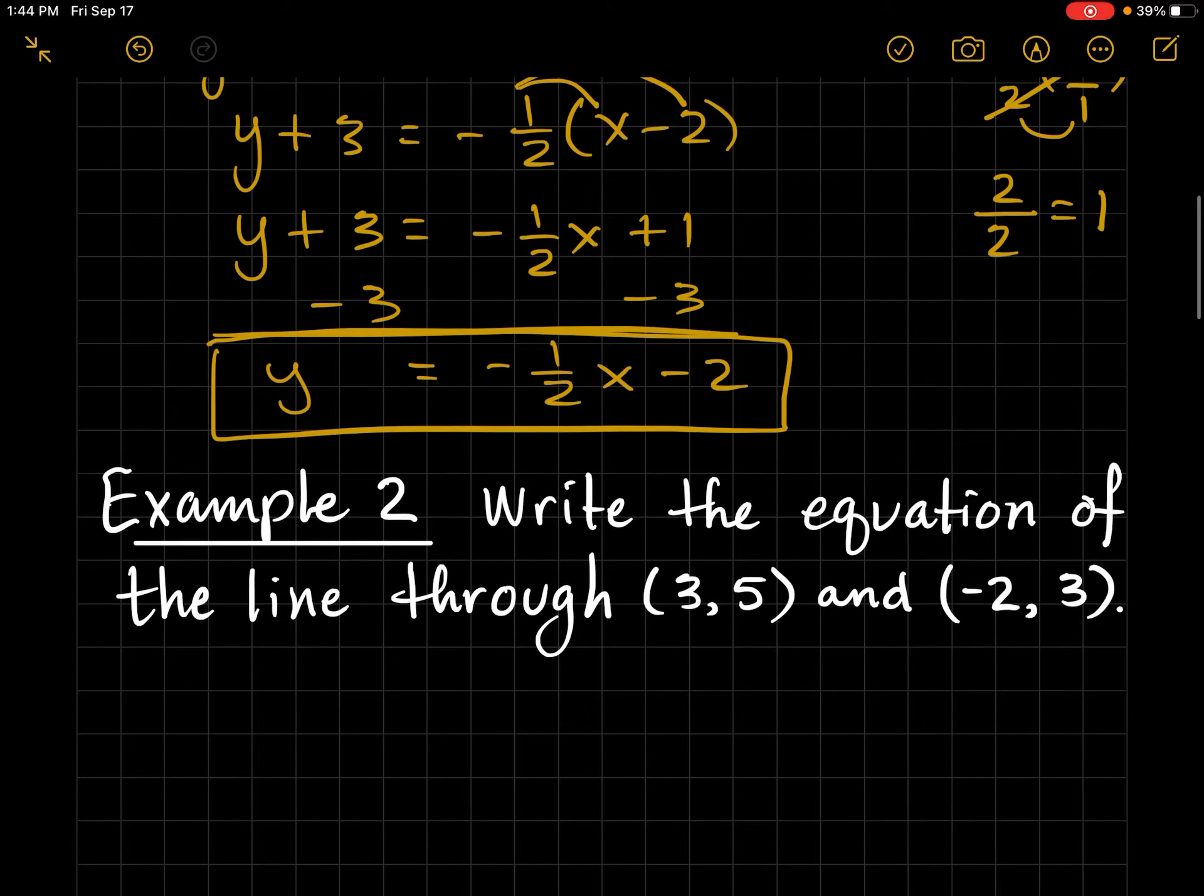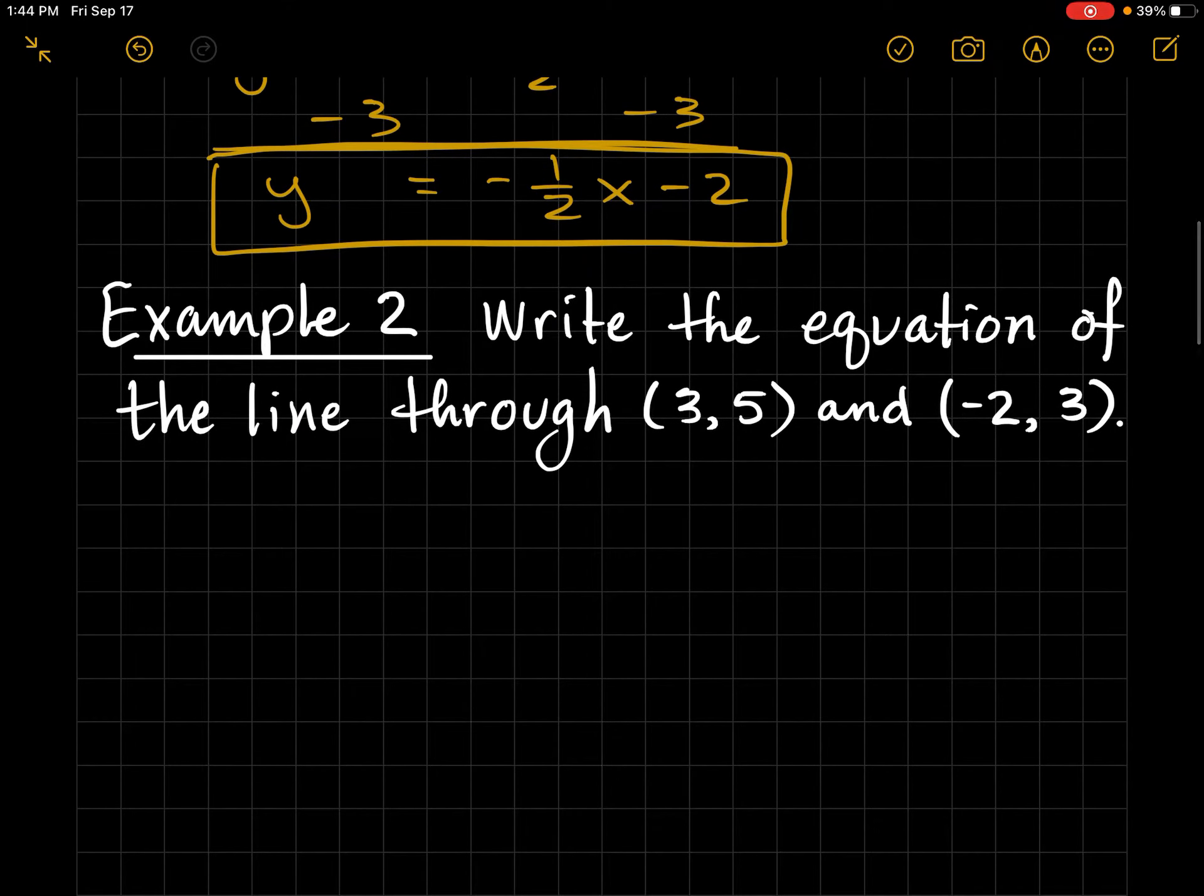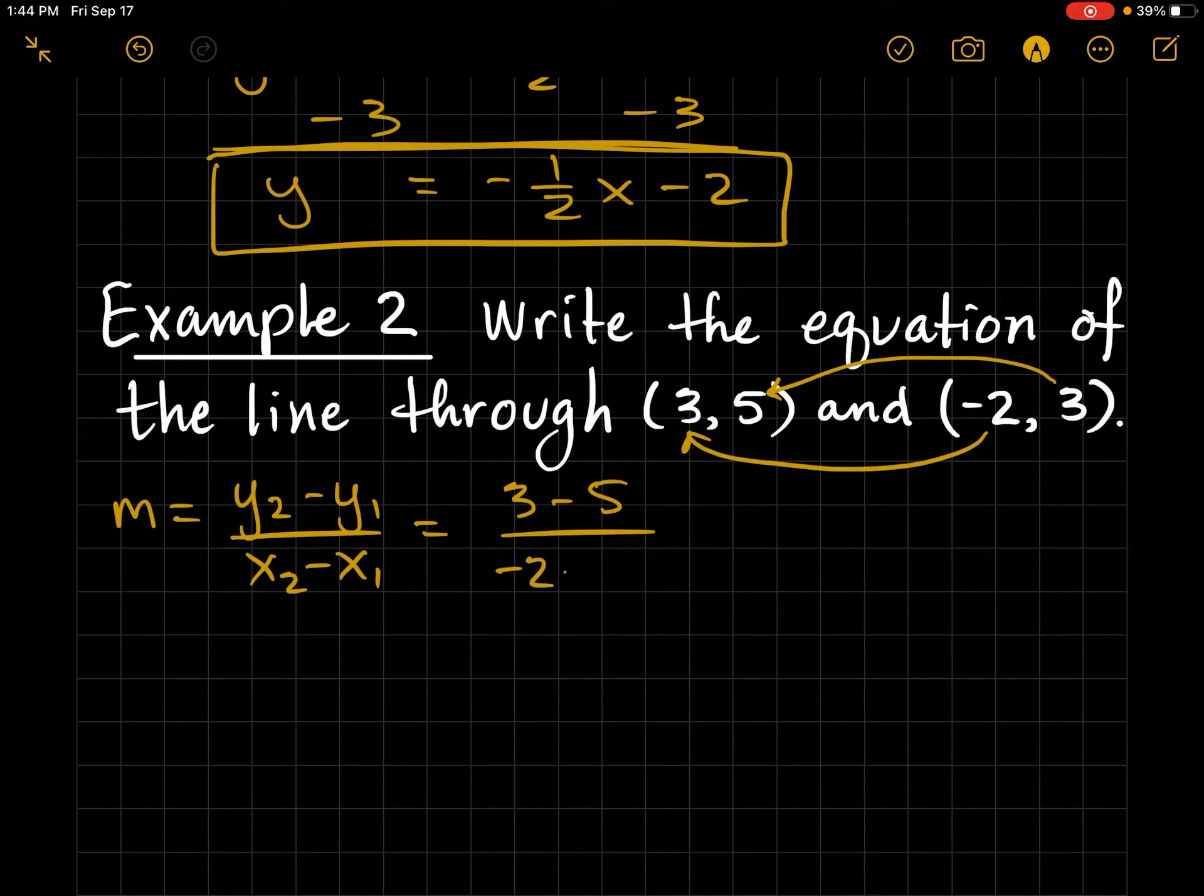Example 2: Write the equation of the line through (3, 5) and (-2, 3). So we have a choice, obviously, always to use point-slope or slope-intercept form. But I'm going to practice using point-slope form. So we've got a couple points, but we don't know the slope. So I'm going to find the slope using this formula. Hopefully, you're getting pretty good at using this one. So 3 minus 5 over negative 2 minus 3. That gives me negative 2 over negative 5, which is 2 fifths.